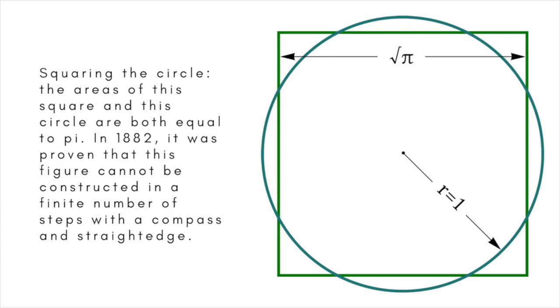In 1882, all hope of ever being able to square the circle was lost when Ferdinand Lindemann proved that pi is transcendental, that is, a number which is not the root of any polynomial.